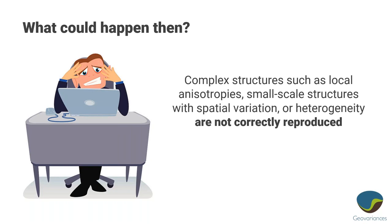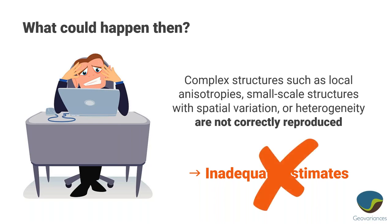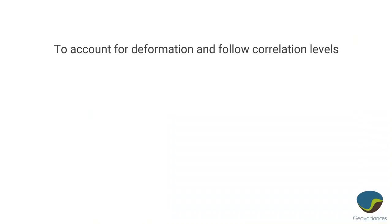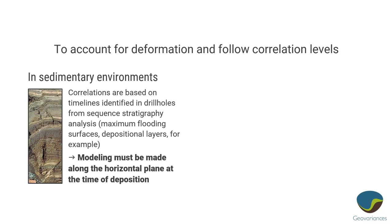We could have all sorts of complex geological structures, and if we make a simple stationarity assumption — assuming it's always constant — we're not going to reproduce all of that complexity in our estimates, and that means our estimates won't be very good. So what can we do about this?